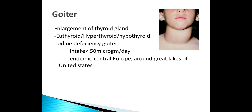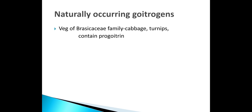Enlargement of the thyroid gland is called goiter, which can occur with normal function, increased activity, or decreased activity. Iodine deficiency goiter occurs when intake is less than 50 micrograms; it is endemic in central Europe or the Great Lakes of the United States. Goitrogens include cabbage and turnips — mainly the Brassica family — which are pro-goitrogenic.